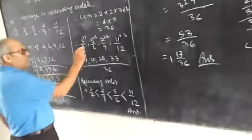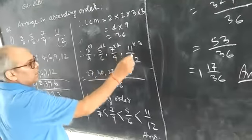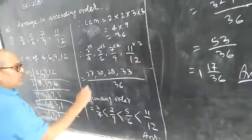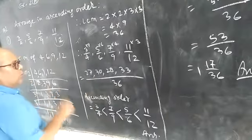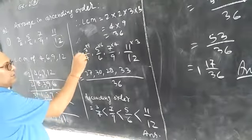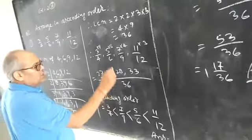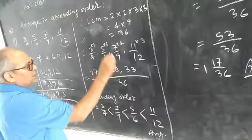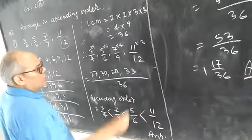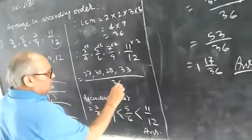Therefore, 3 upon 4, 5 upon 6, 7 upon 9, 11 upon 12. LCM will be 36. 36 divided by 4, which is equal to 9, 3 multiplied by 9. Like this, 36 divided by 6 is 6, 5 into 6. 9 times 4 is 36, 7 into 4. 12 times 3 is 36.